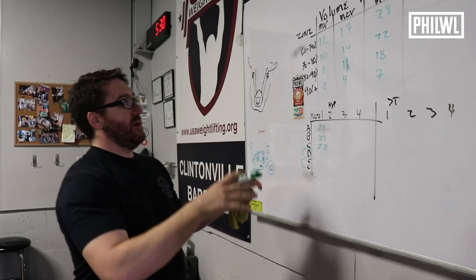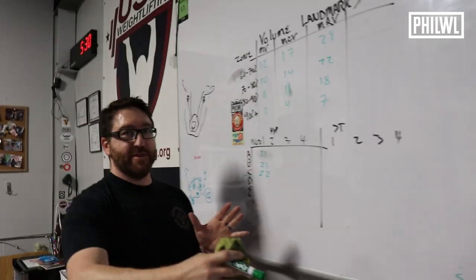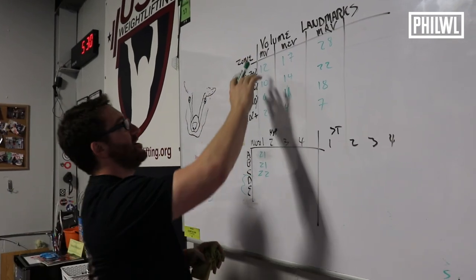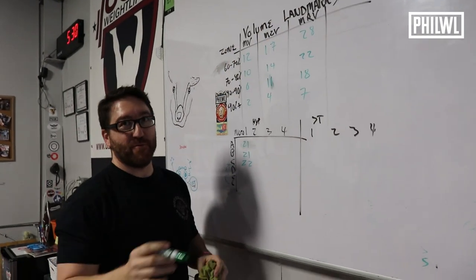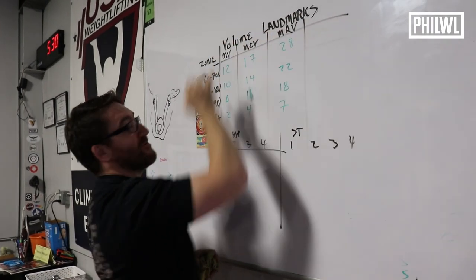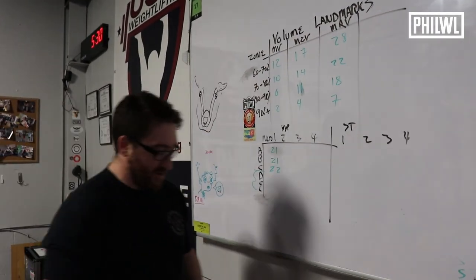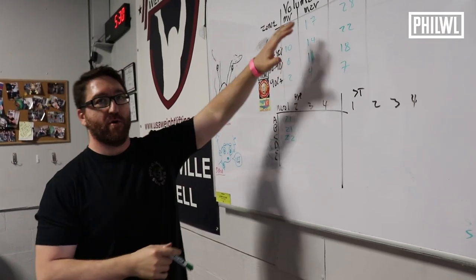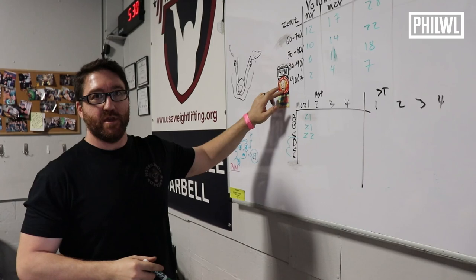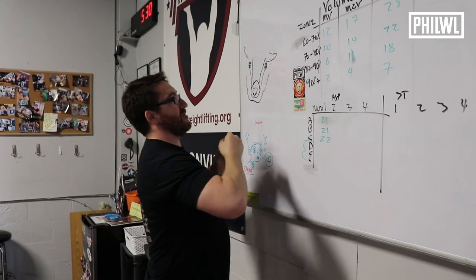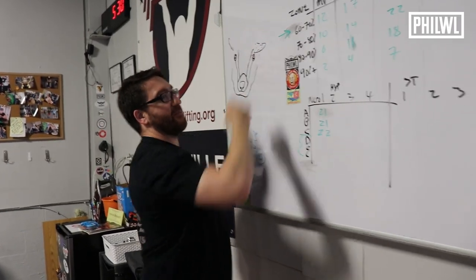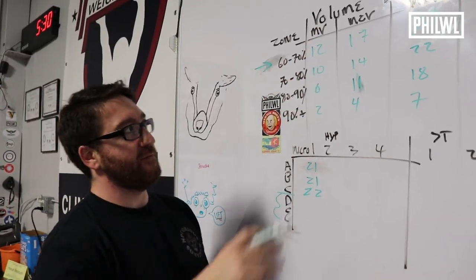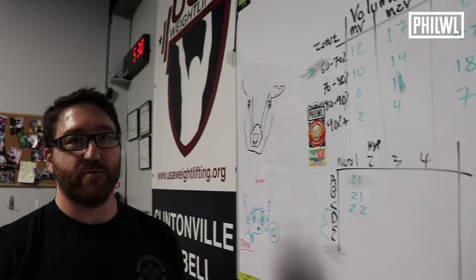The next thing we want to do — essentially the second half of the table of exercises — is find our volume landmarks. The volume landmarks are concerned with intra-session landmarks per zone of intensity. This zone of intensity table looks just like Prilepin's table, because that concept is what we're concerned with.